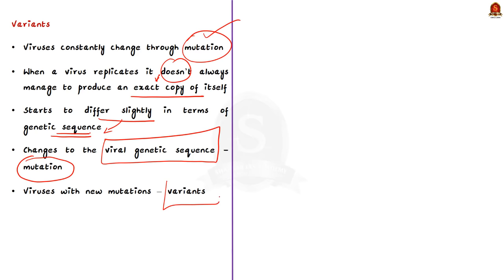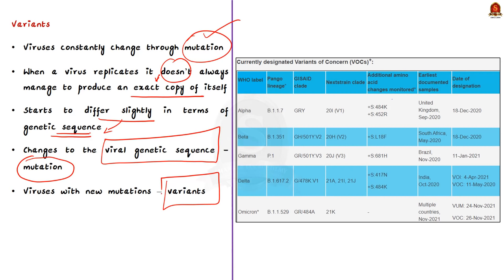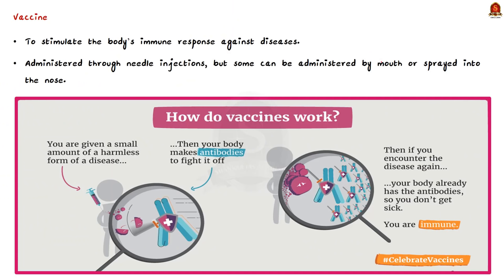Variants can differ by one or multiple mutations. An image here shows the different variants of concern of coronavirus as an example. Variant of concern is discussed in detail in the November 27th analysis — interested candidates can watch that video to understand what is meant by variant of concern and why Omicron is called a variant of concern.